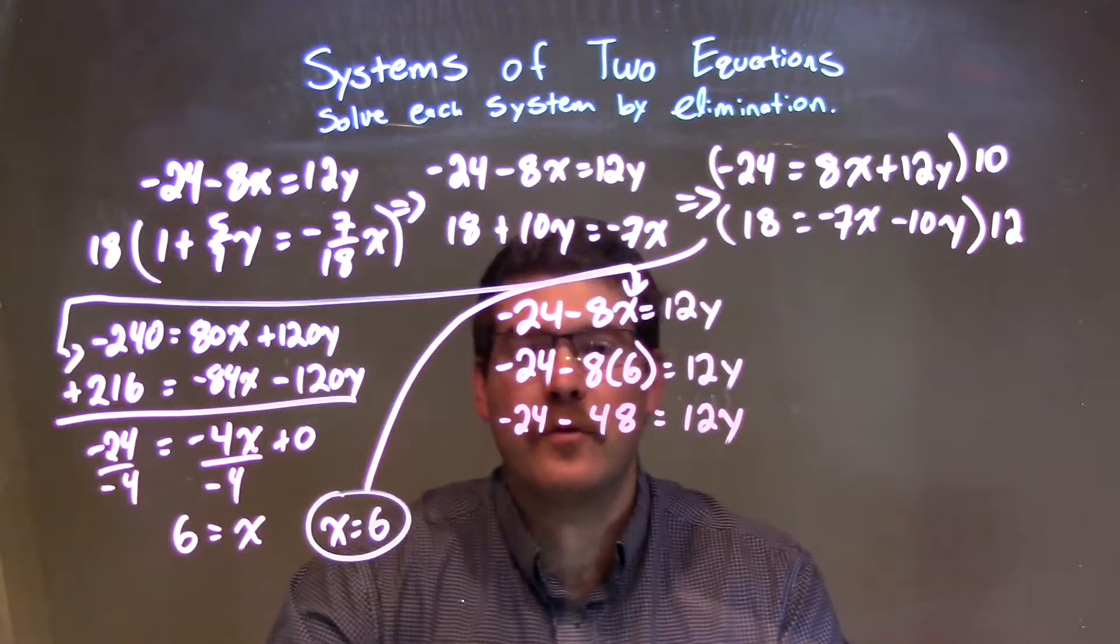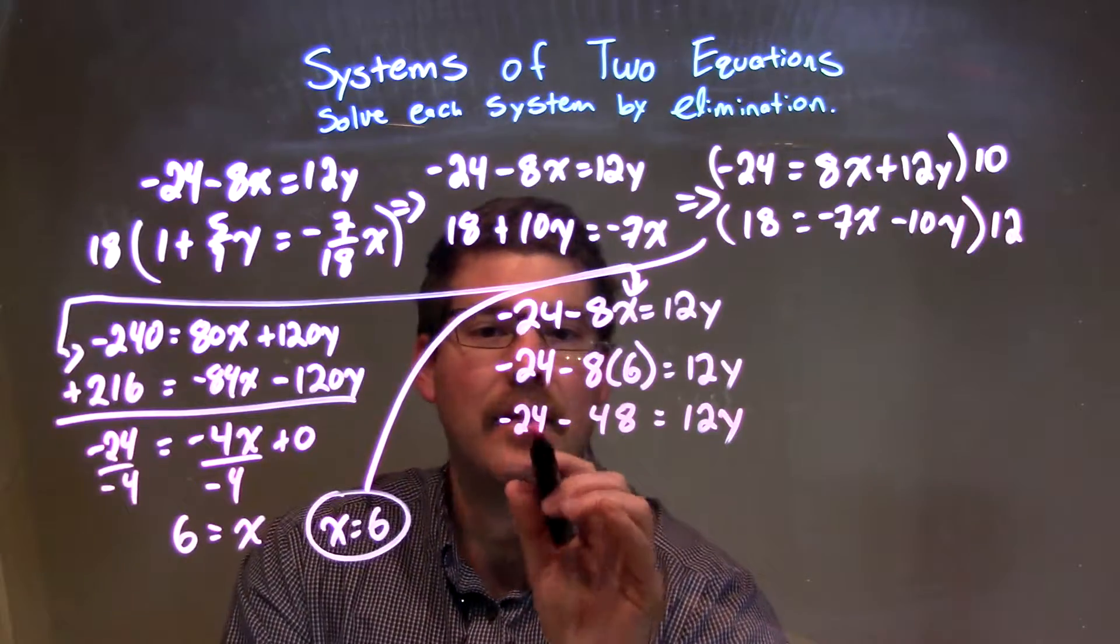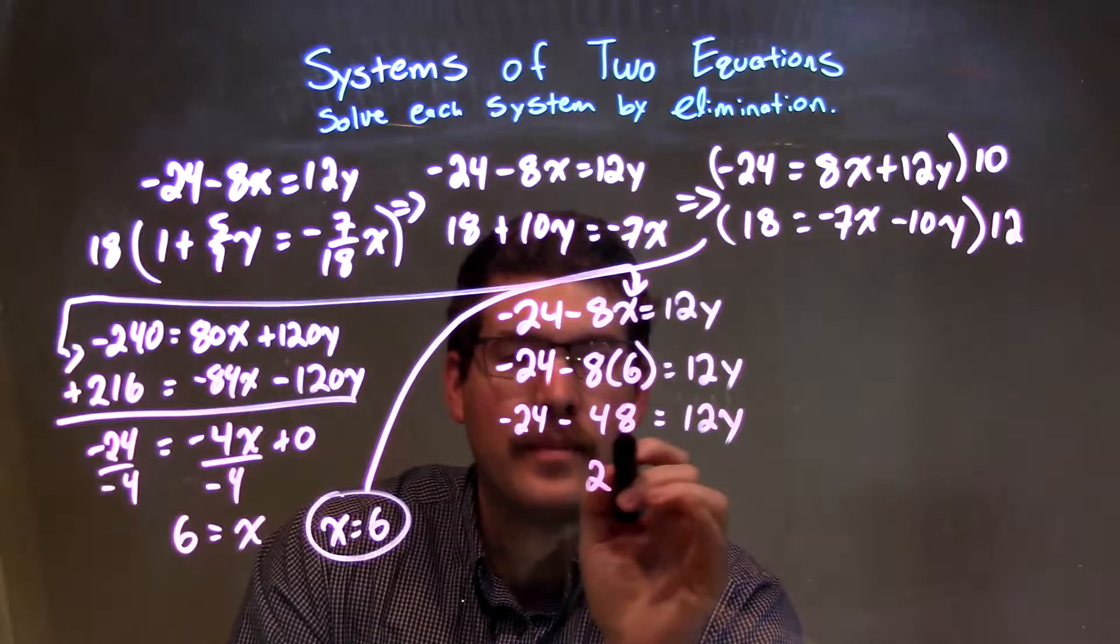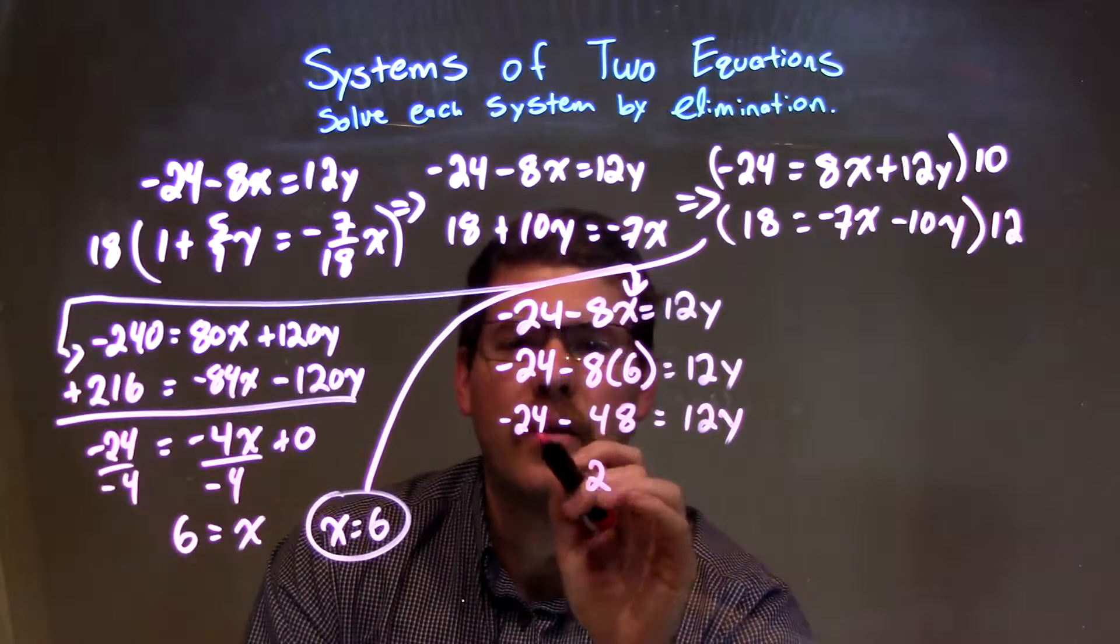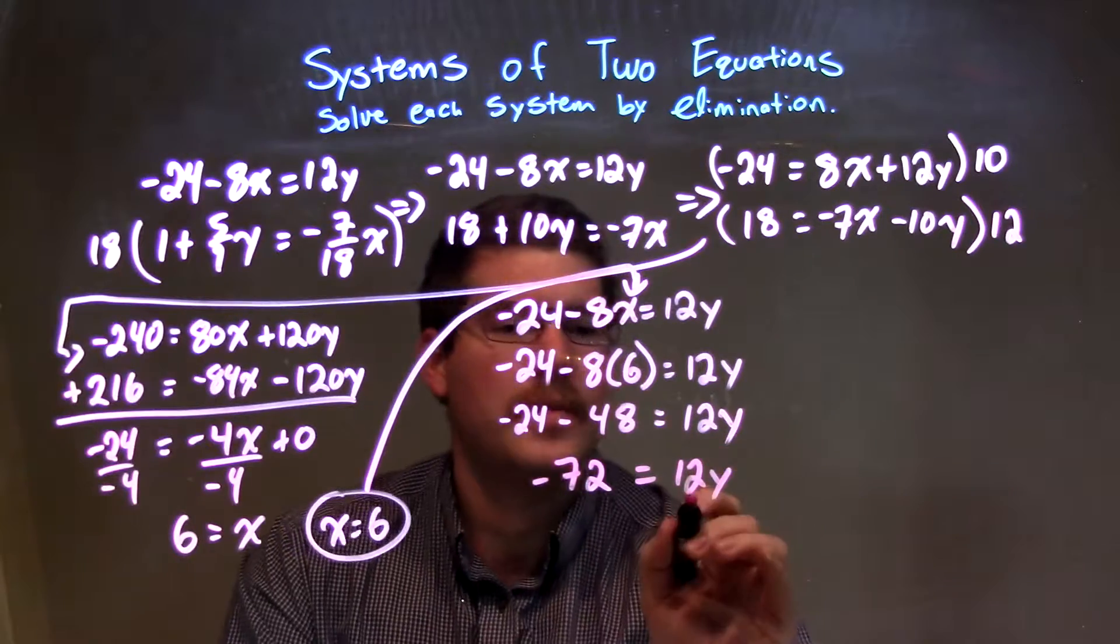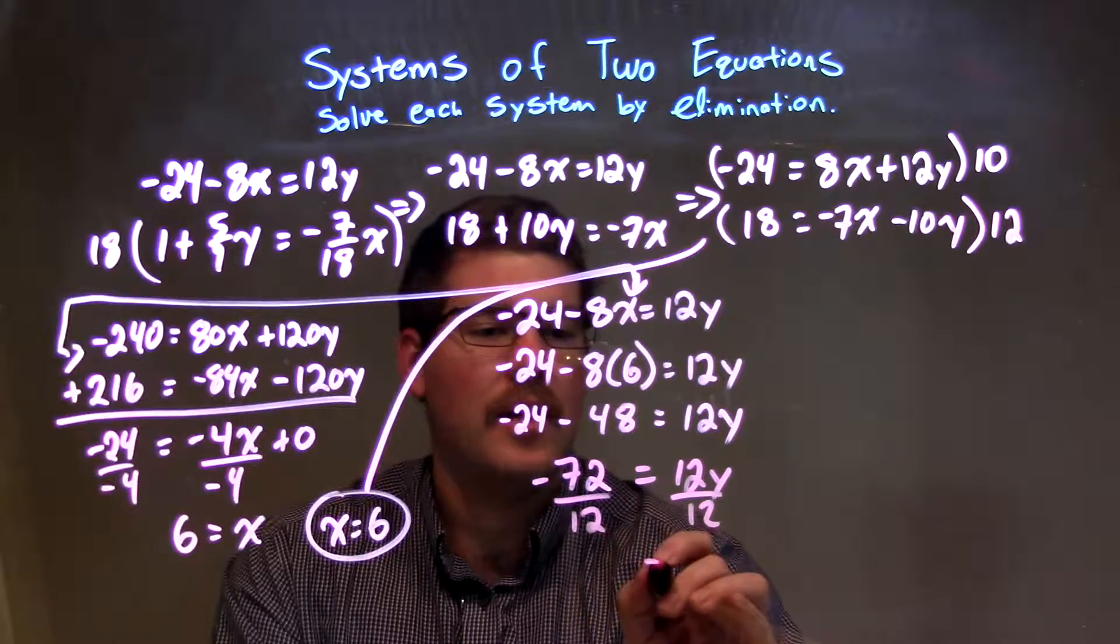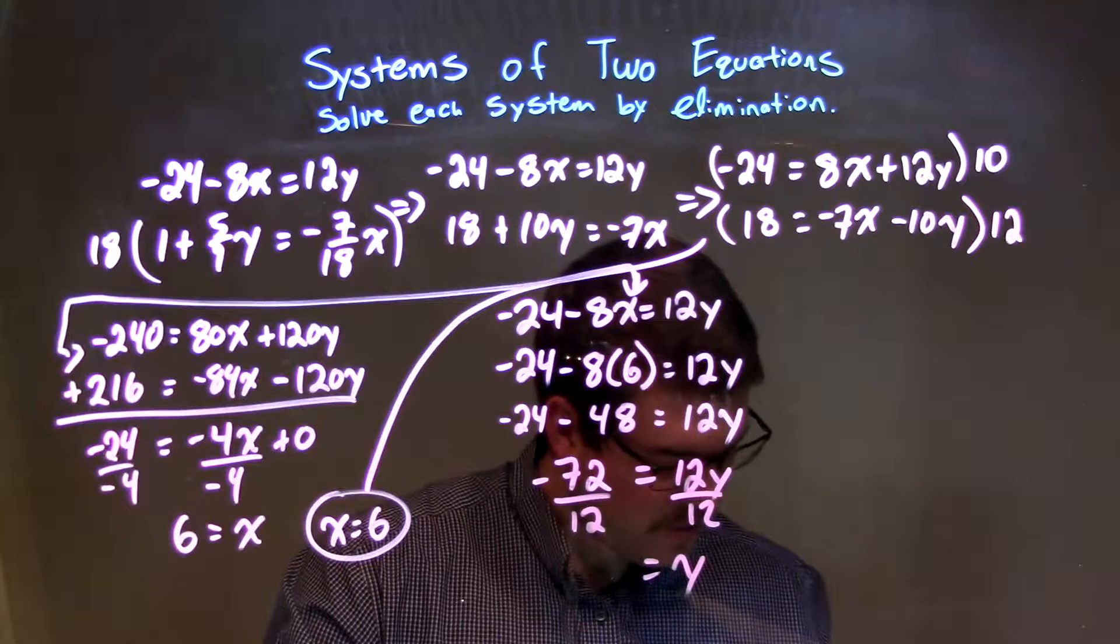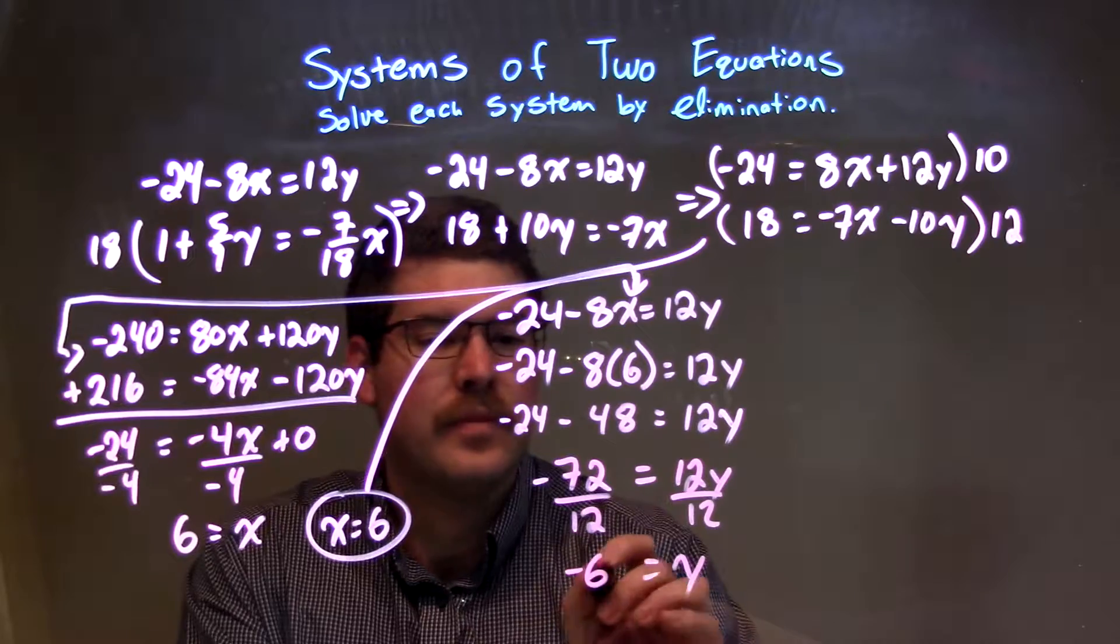So, I'm going to combine negative 24 and negative 48, comes out to be negative 72. So, negative 72 equals 12y. I'm going to divide by 12 to both sides. And that gives me y by itself is equal to negative 72 divided by 12, and that comes out to be a negative 6.